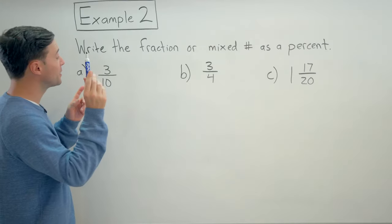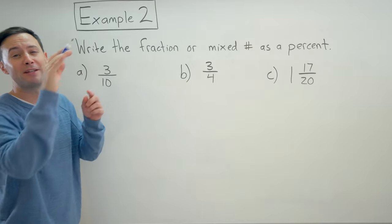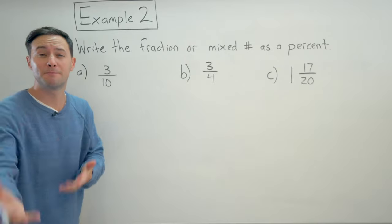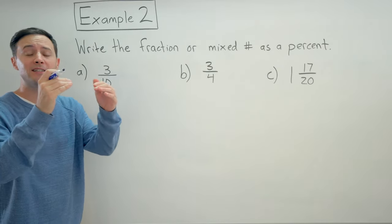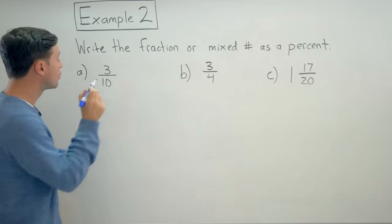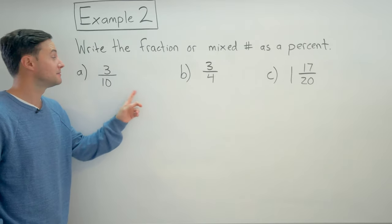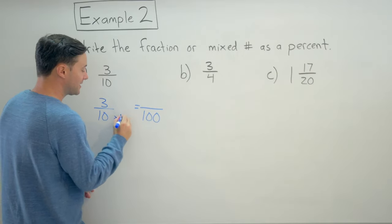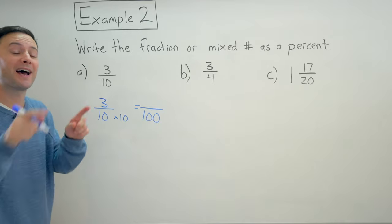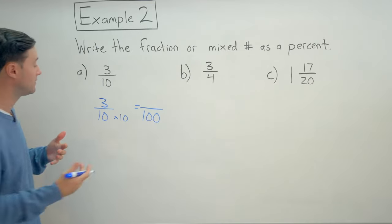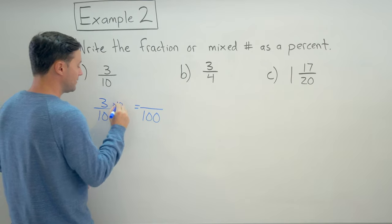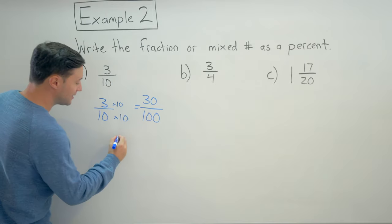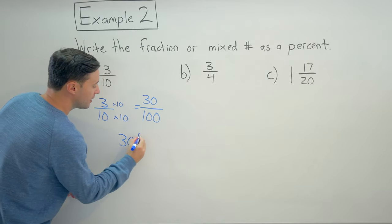Now we're going the other way. We're starting with fractions and mixed numbers and we're changing them into equivalent percents. So three tenths. Well, to make it a percent, we know that that fraction needs to be over a hundred. So we need to get an equivalent fraction that has a denominator of a hundred. Here it's pretty simple. Multiply by ten. If I do that to the denominator, though, I have to do the same to the numerator or else it won't be equivalent. So times ten in the numerator and we get thirty over a hundred,